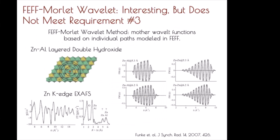Quite some time ago, I saw a study that really got my attention concerning wavelet use in analyzing XAFS data. In this particular study, the authors used a Feth-Morley wavelet to build a series of functions to help distinguish between different scatterers in essentially the secondary coordination shells. Using this approach, these authors were able to unambiguously determine that one shell contained only zinc interactions in zinc-aluminum layered double hydroxides, while another shell was comprised of both zinc and aluminum interactions. This seemed like an incredibly useful approach, but it didn't really meet my requirement of being easily integrable into our XAFS fitting routines.